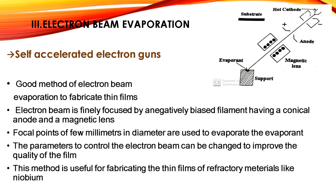The next method is self-accelerated electron guns, a good method of electron beam evaporation used to fabricate thin films. The electron beam is finely focused by a negatively biased filament having a conical anode and a magnetic lens. Focal spots of a few millimeters in diameter are used to evaporate the evaporants. The parameters controlling the electron beam can be changed to improve film quality. This method is useful for fabricating thin films of refractory materials like niobium. The magnetic lens, evaporant, supports, hot cathode, and filament are shown in the figure.